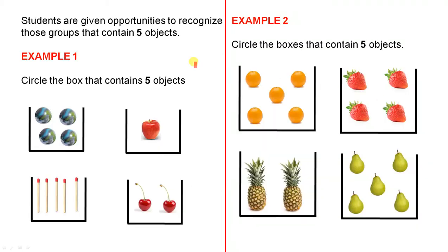Students are given opportunities to recognize those groups that contain 5 objects. So if you ask the students to circle the box that contains 5 objects, you would probably give them a hint when they heard the word box. They will probably think that there is only one box and they would be correct. They would just pick this box here and circle that one.